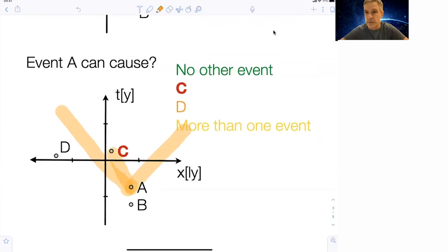We can send a signal in this direction and wait to make an impact on event C. We cannot travel faster than the speed of light, which would be necessary to reach event D. And we cannot go backwards in time with messages to reach event B.